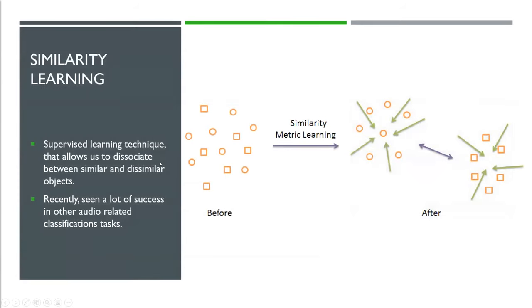For our approach we explored the use of similarity learning to create a content-based music recommendation system. Similarity learning is a supervised learning technique where the goal is to find the similarity function that can measure the similarity between two objects, in our case songs. Similarity learning has seen a lot of success in tasks such as instrument recognition, artist classification, and genre classification. This led us to further extend its application into music recommendation.